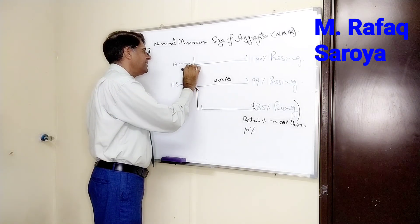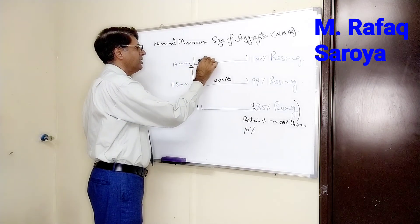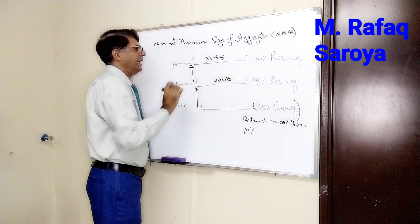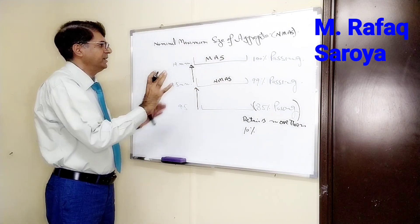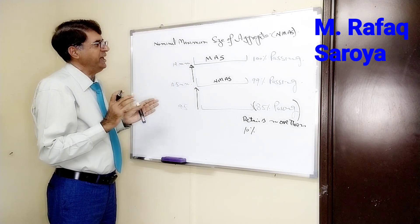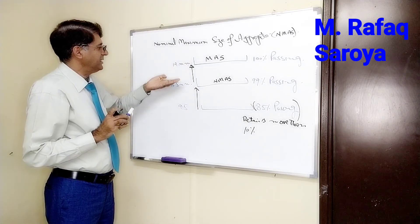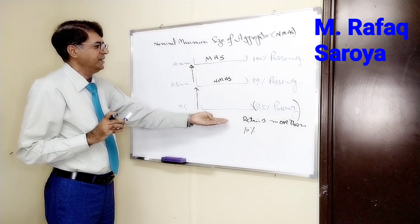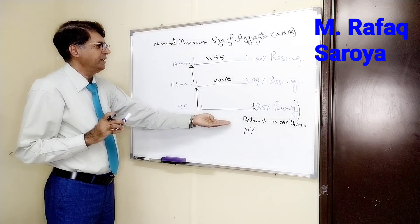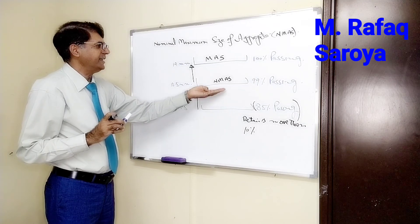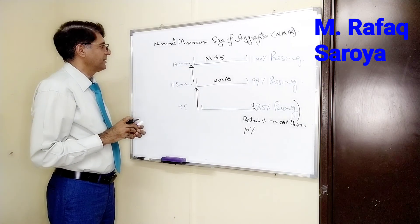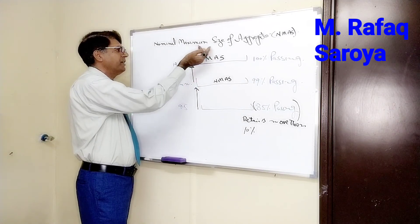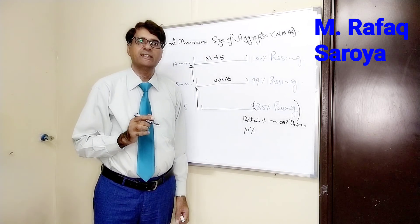When we go one sieve above the NMAS, that is known as the Maximum Aggregate Size. To recap: 100% passing, 99% passing, 85% passing — here the retained is more than 10%, so the sieve higher than this is the Nominal Maximum Aggregate Size, and the sieve higher than the NMAS is the Maximum Aggregate Size. It is quite straightforward but very important to understand.